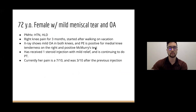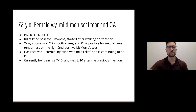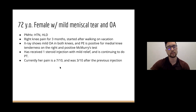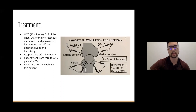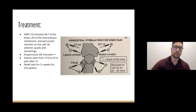Here's a case about using acupuncture: a 72-year-old female with a meniscal tear and osteoarthritis in the knee. She has hypertension and hyperlipidemia; the pain has been going on for three months, starting after walking a lot on vacation. X-ray shows mild osteoarthritis; physical exam is positive for medial knee tenderness on the right and McMurray's test. She received a steroid injection with mild relief and is continuing physical therapy. Her pain is 7 out of 10, was 3 out of 10 after the injection.